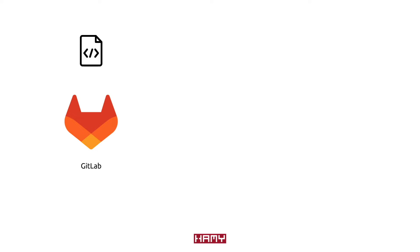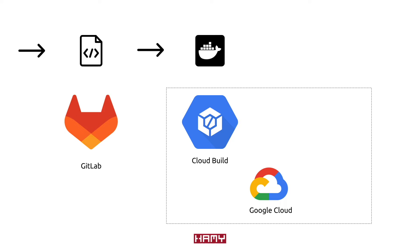The first part of our pipeline is GitLab, which is going to host our code. Some important files that exist here are all of our application code, our Docker files, our GitLab CI config, and our Cloud Build config, which we'll go into more later. When we push code to our repo, we're going to trigger our deployment pipeline, which sends our code over to Cloud Build.